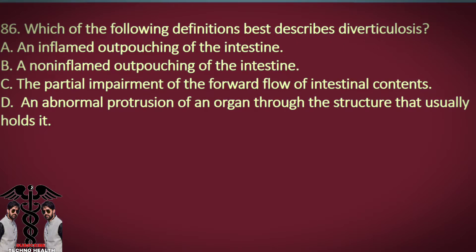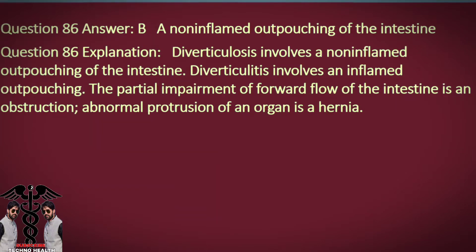Question 86. Which of the following definitions best describes diverticulosis? A. An inflamed outpouching of the intestine. B. A non-inflamed outpouching of the intestine. C. The partial impairment of the forward flow of intestinal contents. D. An abnormal protrusion of an organ through the structure that usually holds it. Answer: B. A non-inflamed outpouching of the intestine. Explanation: Diverticulosis involves a non-inflamed outpouching of the intestine. Diverticulitis involves an inflamed outpouching. The partial impairment of forward flow of the intestine is an obstruction. Abnormal protrusion of an organ is a hernia.